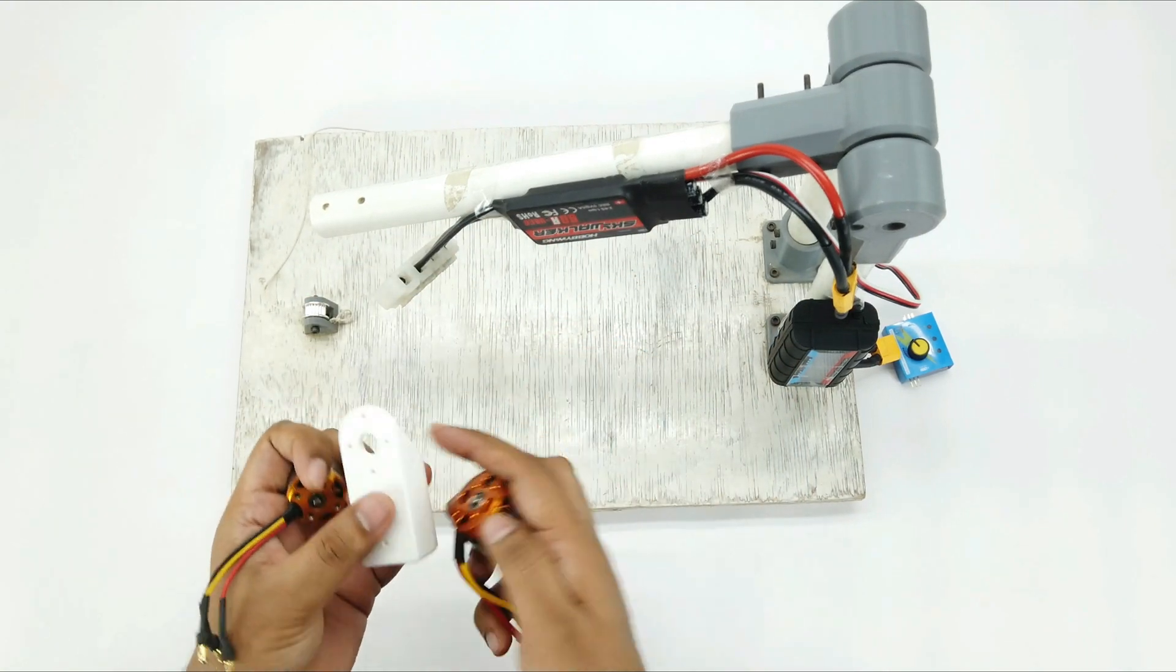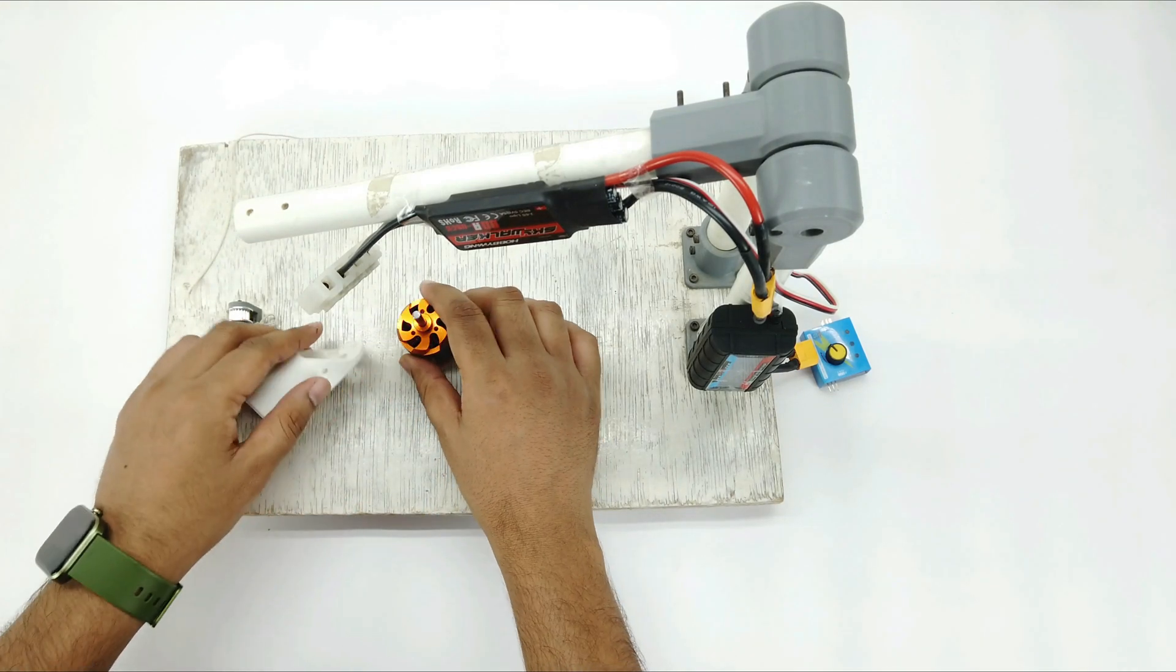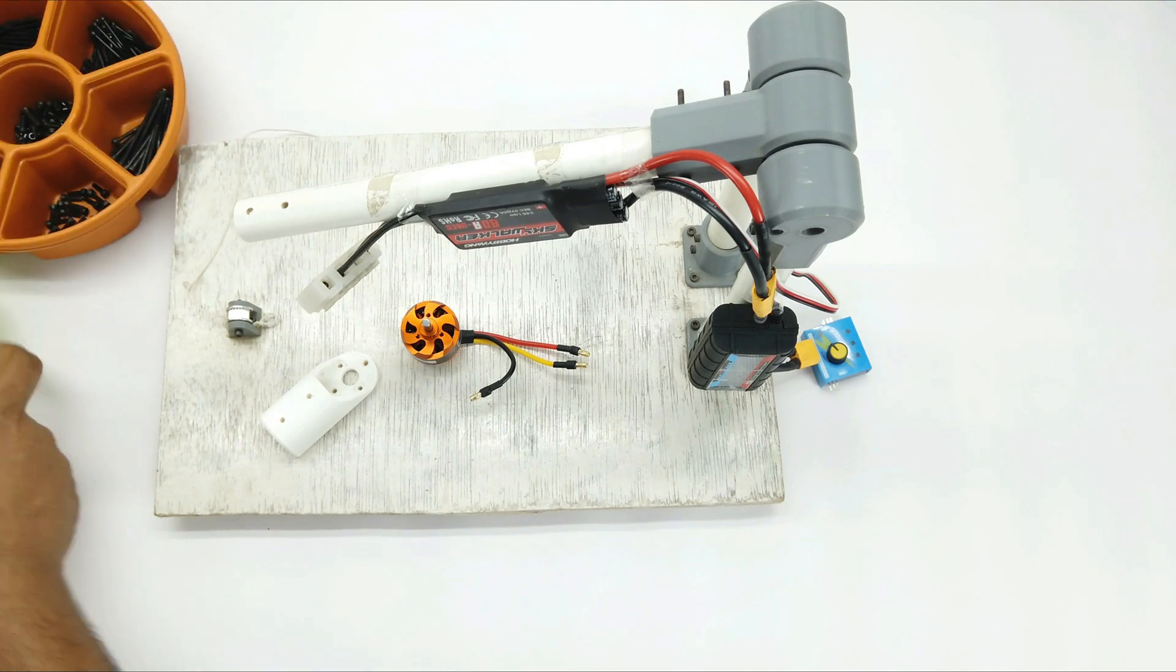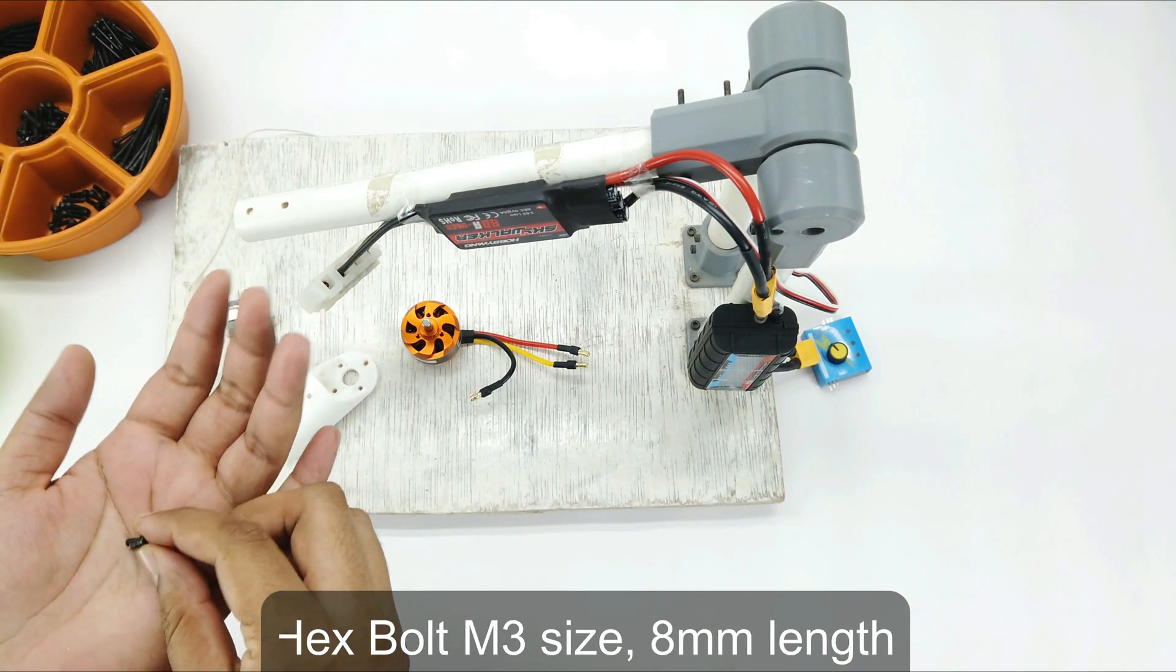So for this one I have designed a new connector. First I will do a thrust test of 1000kV motor. So I will use nuts and bolts of M3 sizes. These are the M3 size bolts of 8mm length.